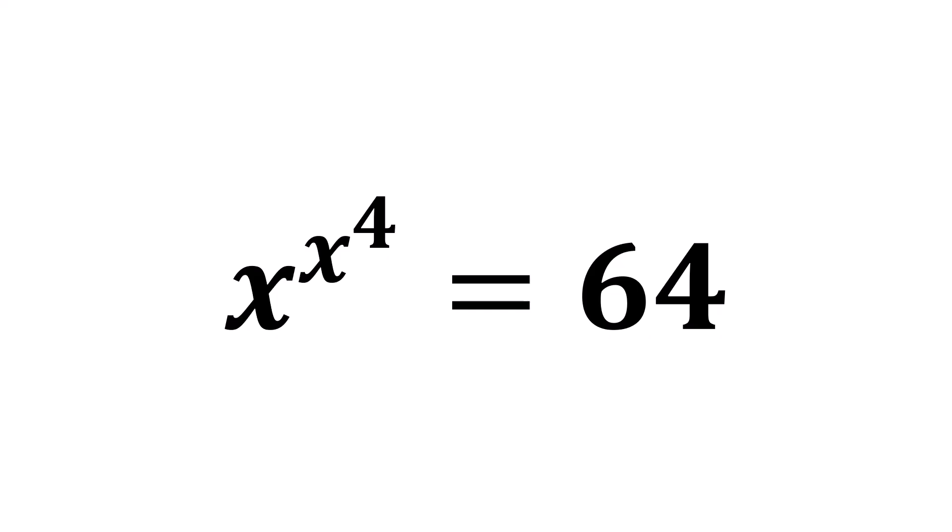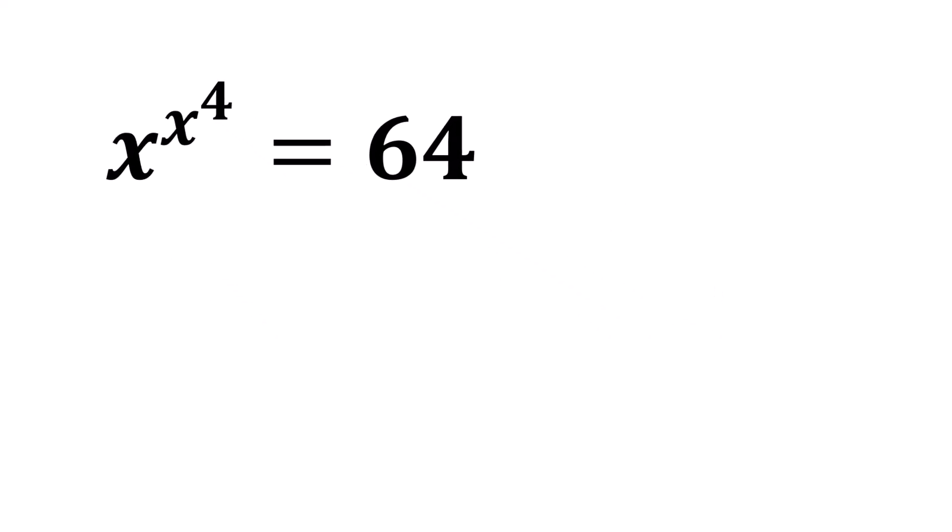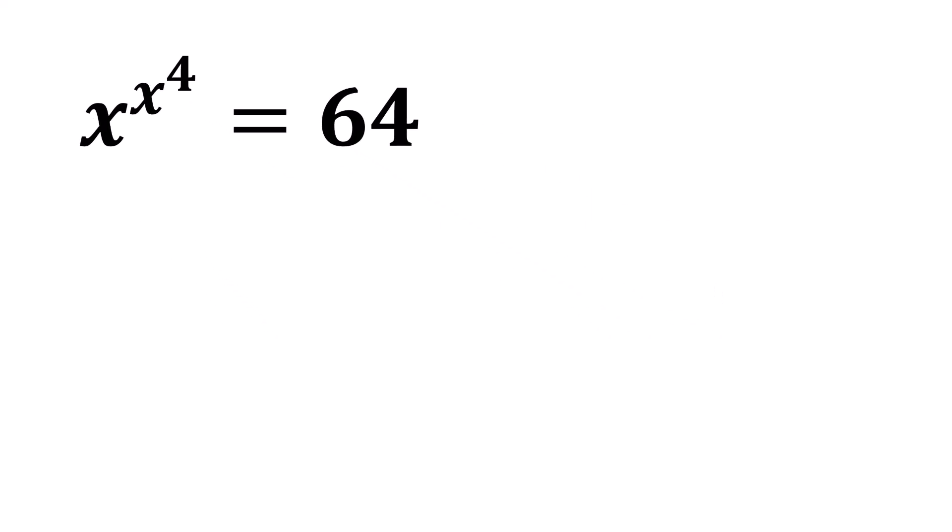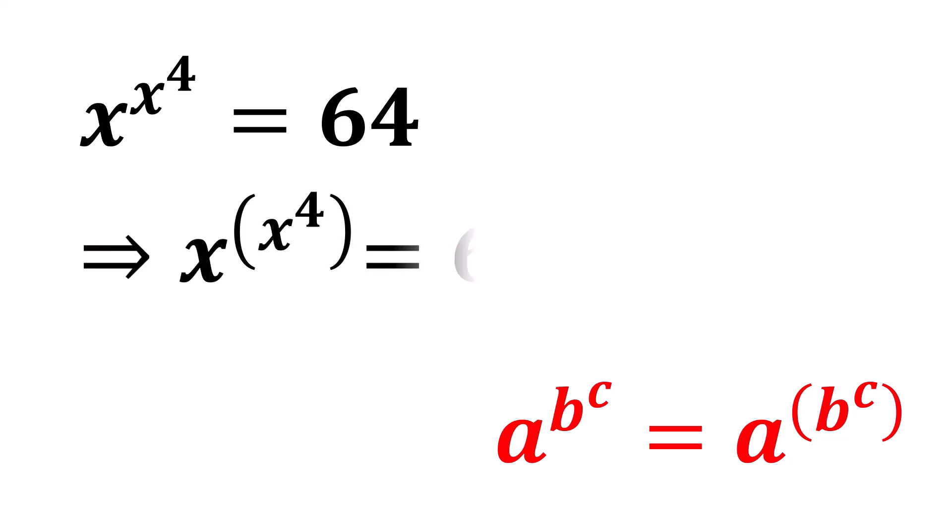x to the power of x to the power of 4 equals 64. Now, applying this exponential rule a to the power of b to the power of c is equal to a to the power of b to the power of c, we will get this following equation: x to the power of x to the power of 4 equals 64.